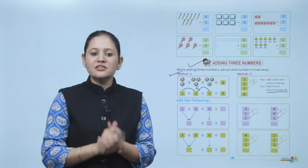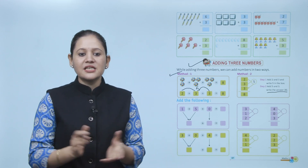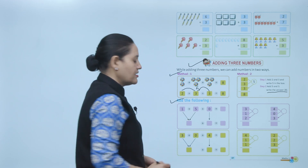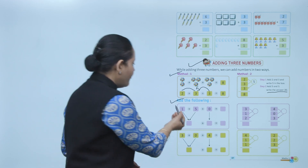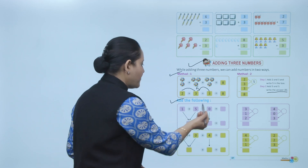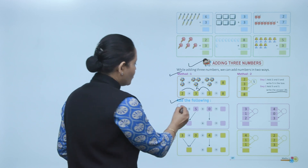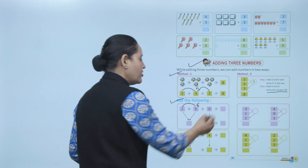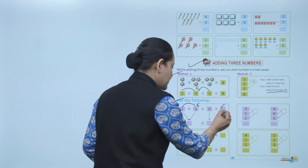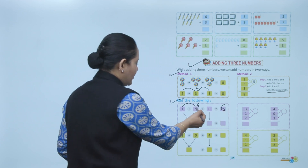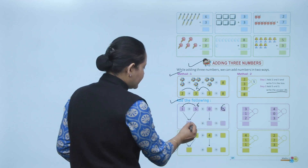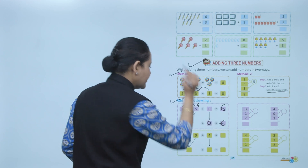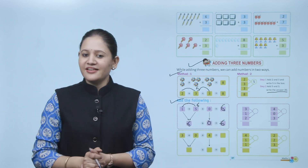Next, add the following: one plus five plus zero. One plus five equals six, then six plus zero equals six. So one plus five plus zero equals six.